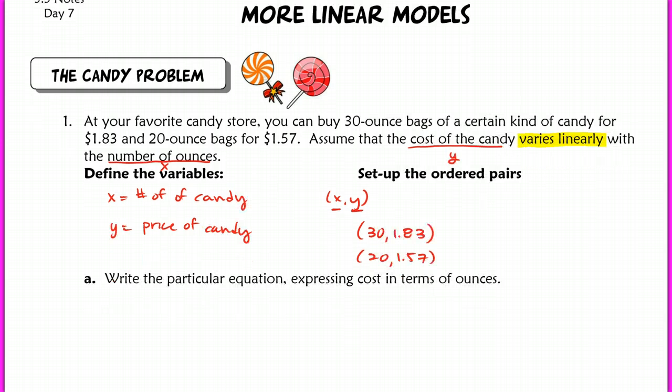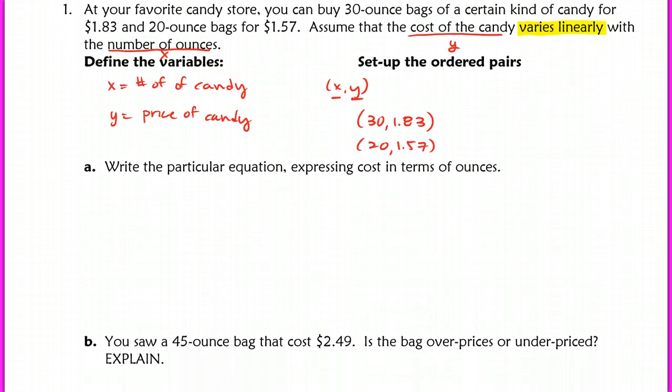Alright, now that we have our two ordered pairs we can actually write an equation between these two points. So for point-slope form, all we need to find is our slope first. So for our slope, let's do $1.83 over 30. I'm just stacking the points. I just like using this method because I know I'm not going to mess up. So this should give me $0.26 on the top over 10 ounces on the bottom. I want to make sure that I actually write this as a decimal. So 0.26 divided by 10 should give me 0.026. So make sure that you're writing your slope, not in terms of a fraction with a decimal inside of it. Make sure you're rewriting it as just a decimal.